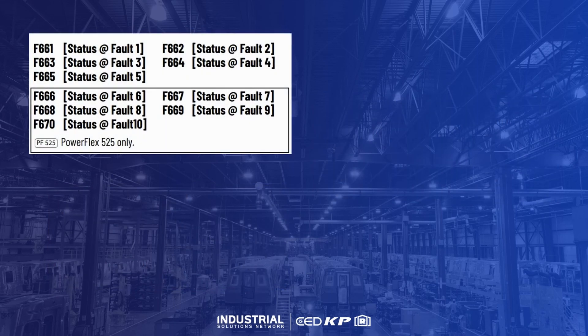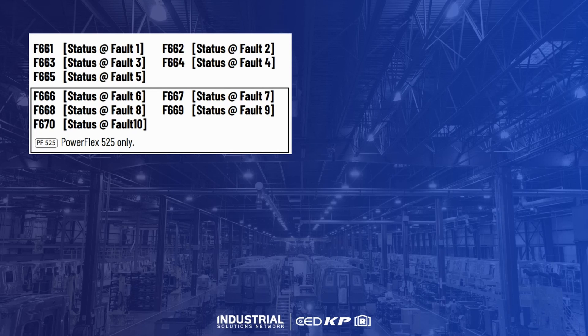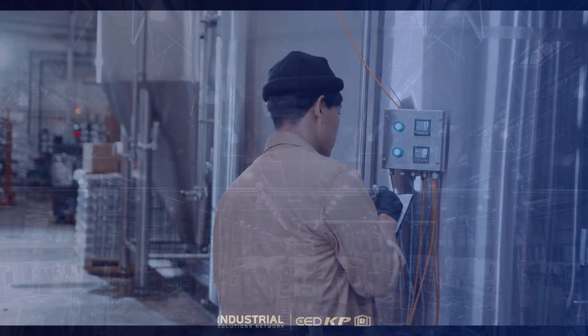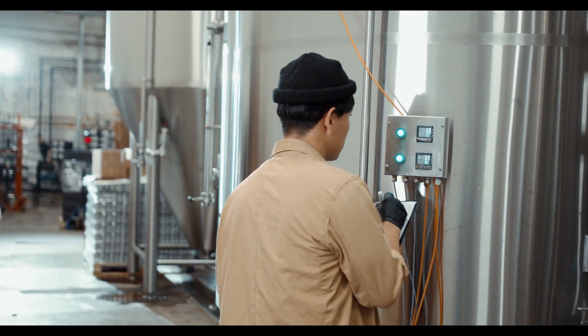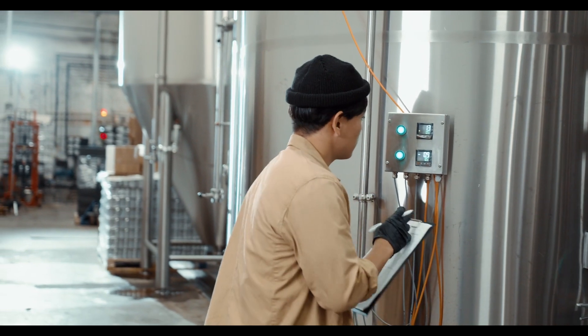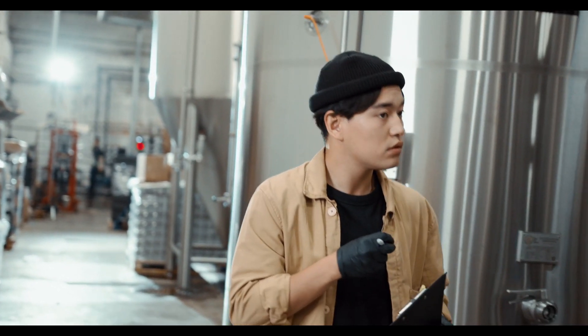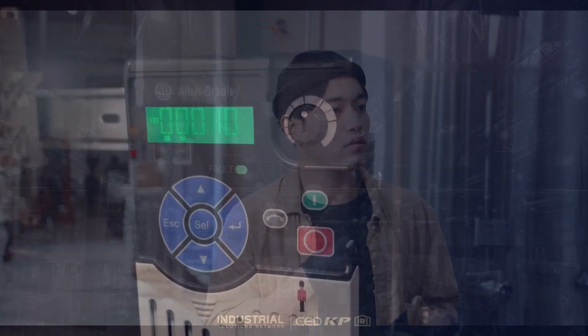Regarding the status parameter set, each parameter displays a five-digit code of ones and zeros that correspond to the state of the drive during the time of the associated fault. Being able to associate a fault code with a concurrent drive status greatly enhances any troubleshooting endeavor.